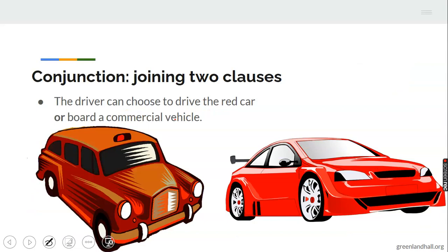Another example: 'The driver can choose to drive the right car or board the commercial vehicle.' The two clauses are 'The driver can choose to drive the right car' and 'board the commercial vehicle.' The conjunction there is 'or.'